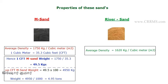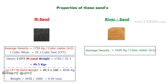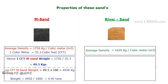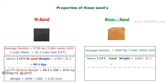For river sand, the density is normally lesser than M sand. The average density of river sand is 1620 kg per cubic meter. As we know, 1 m³ equals 35.3 CFT. So for one CFT of river sand: 1620 divided by 35.3 gives approximately 45.8 kg per cubic foot.